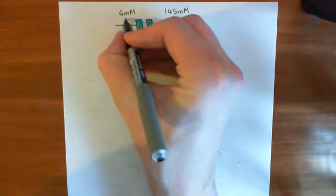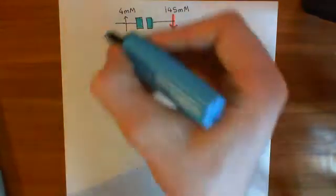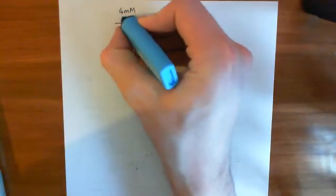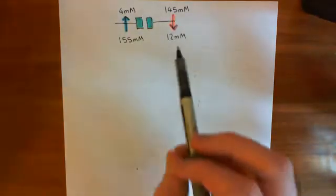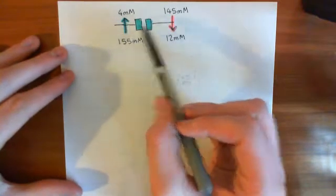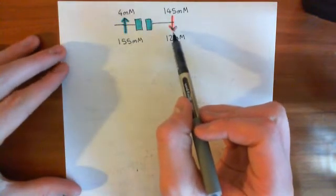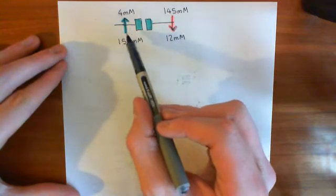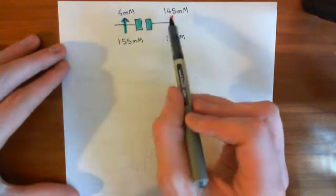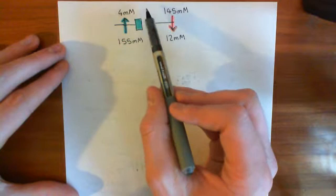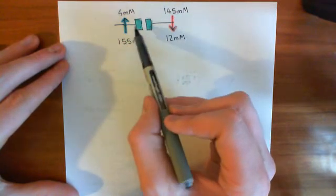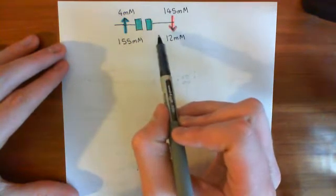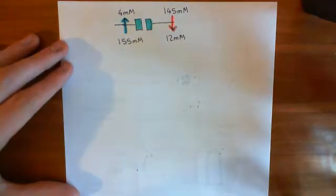Similarly, the concentration gradient for potassium is outward — there's roughly a 40-fold gradient across the membrane. You might think this outward movement of potassium would far outweigh the inward movement of sodium, meaning the net movement of positive charge would be outward, which would hyperpolarise the membrane potential rather than depolarise it. But that's the flaw in this argument.